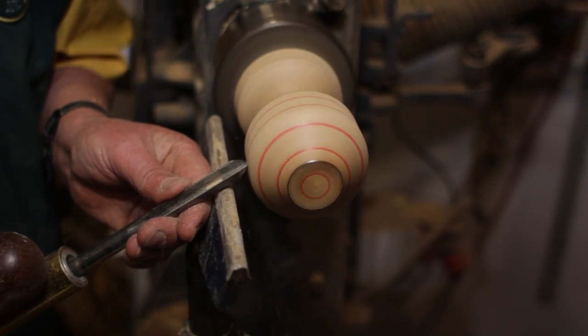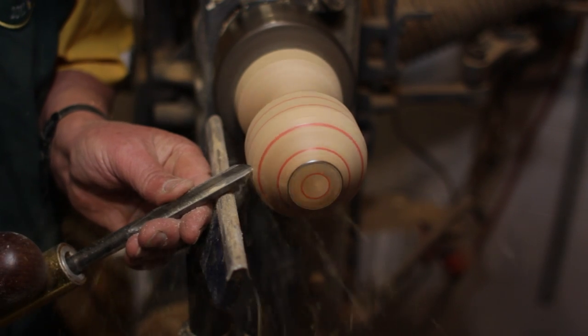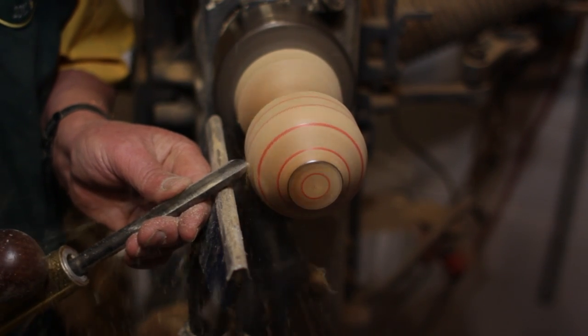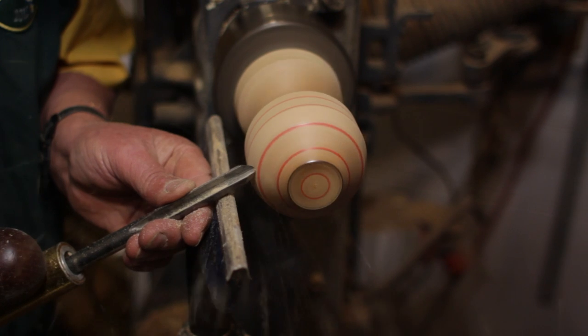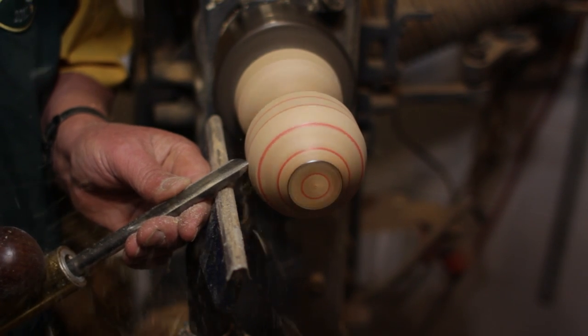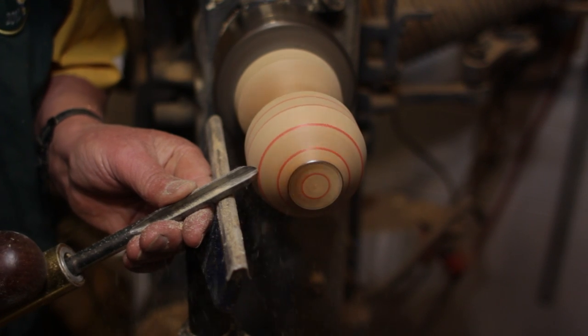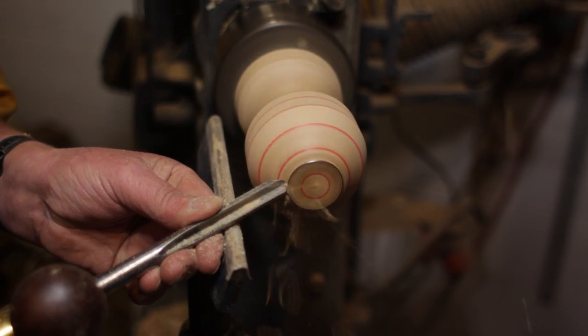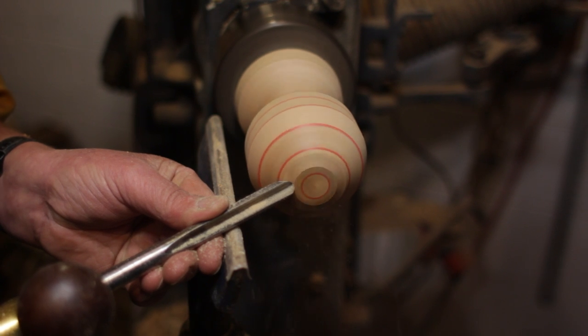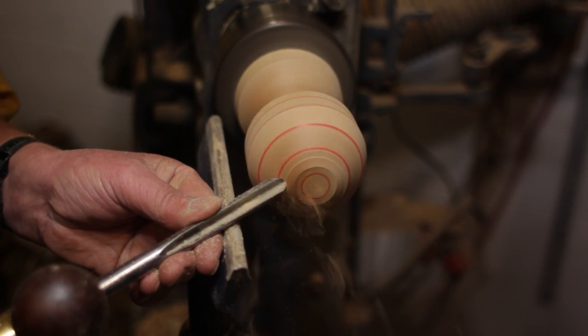So now we take the gouge again and we are now turning away the black line and making a straight cut between the red lines. Accuracy again is essential. You should be cutting away about half of the red line.